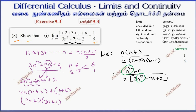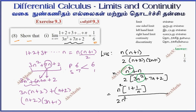This is the highest power value. In the numerator, dividing by n², the value is 1 plus 1 by n. In the denominator, dividing by n², the value is 3 plus 7 by n plus 2 by n².